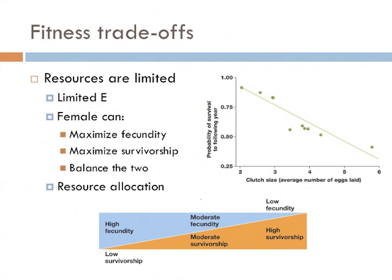If you look at the graph on the right, you can see the effect of resource allocation on fecundity. On the x-axis, the independent variable is the average clutch size of a species of birds — the number of eggs a bird lays per year. The dependent variable on the y-axis is the probability of survival to the next year. Birds with very low clutch sizes have a very high chance of living through the next year. In contrast, birds that have high reproduction have a very low chance of surviving to the next year.